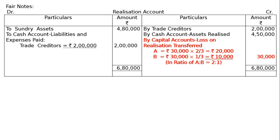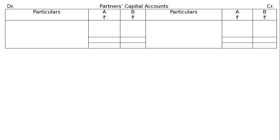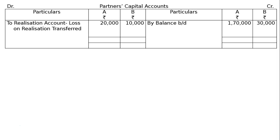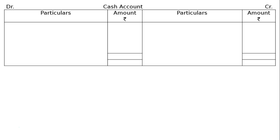In the partners' capital accounts: credit side shows balances brought down — A rupees 1 lakh 70,000 and B rupees 30,000. Debit side shows loss on realization transferred — A rupees 20,000 and B rupees 10,000. Totaling the credit side and finding the gap: A will be paid rupees 1 lakh 50,000 and B will be paid rupees 20,000.